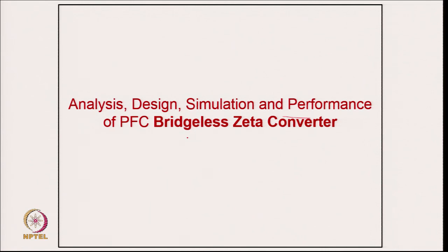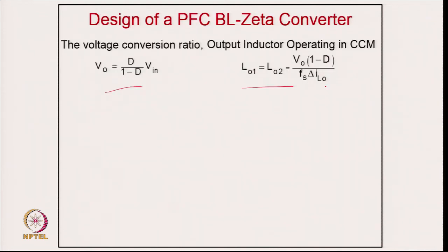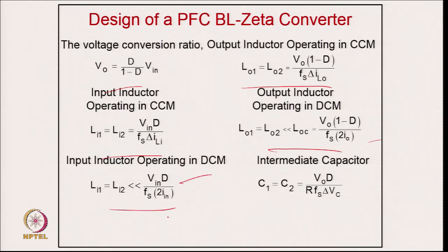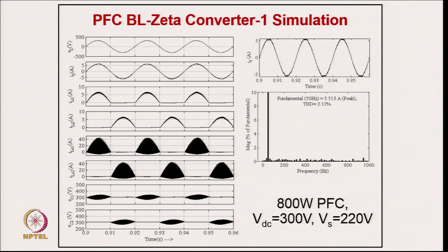For the PFC bridgeless Zeta converter, the first topology has positive and negative half-cycle circuits with no diode bridge. Design equations include: output voltage, output inductor for CCM, input inductor for CCM, boundary condition (output inductor DCM must be less than this value), input inductor for DCM, energy transfer capacitor, and output capacitor for second harmonic ripple. For 800 W, 300 V output: THD = 2.1%; supply current almost sinusoidal; input current continuous for both half cycles; output inductor discontinuous for both half cycles; capacitor voltage continuous for both half cycles; THD = 2.12%.